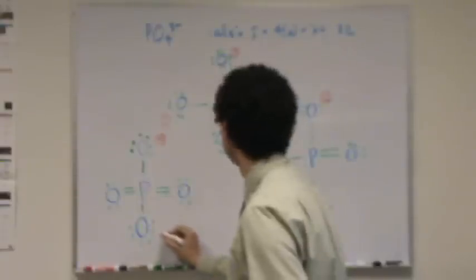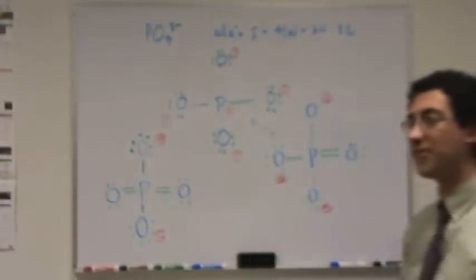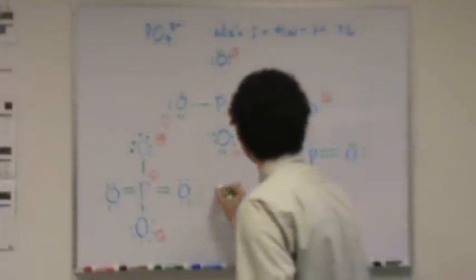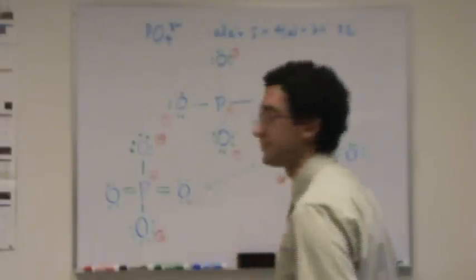Okay. Now, those two leftover oxygens are minus one. What about the phosphorus? That's its formal charge. Negative minus. Okay. That's okay. Another resonance structure. Which is fine.